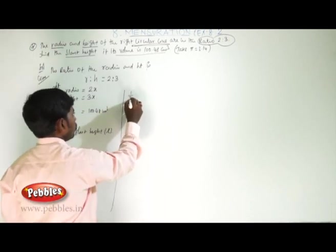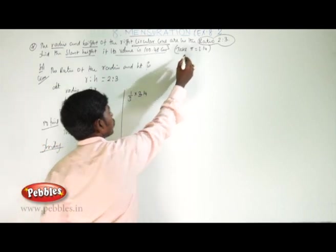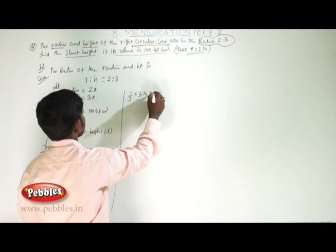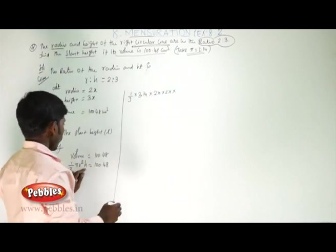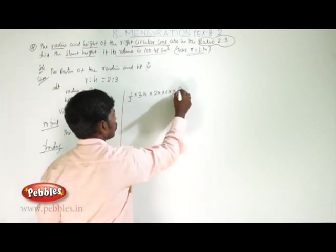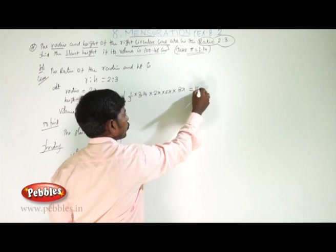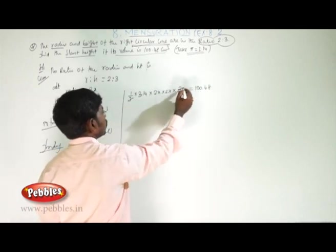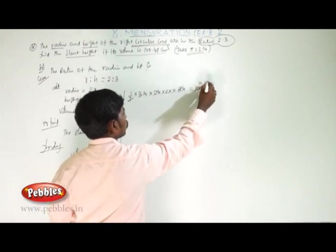Now 1/3 × 3.14 × (2x)² × 3x = 100.48. The 3 cancels, 2 squared is 4, giving 50.24.